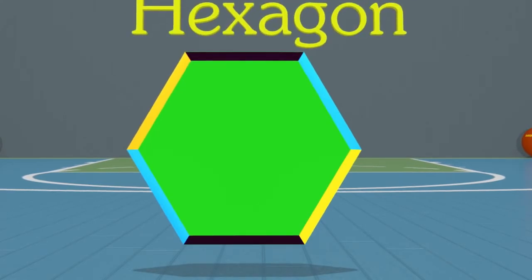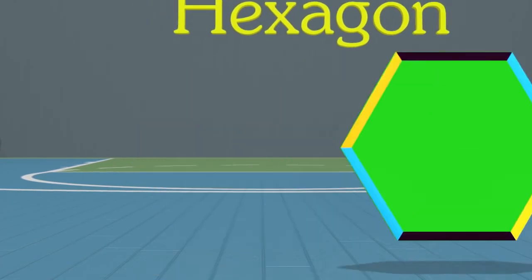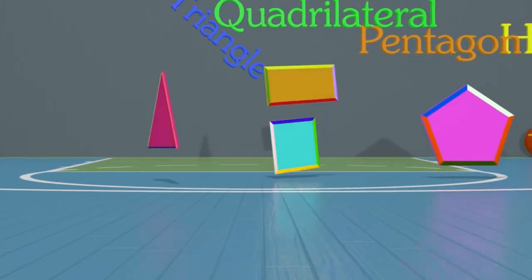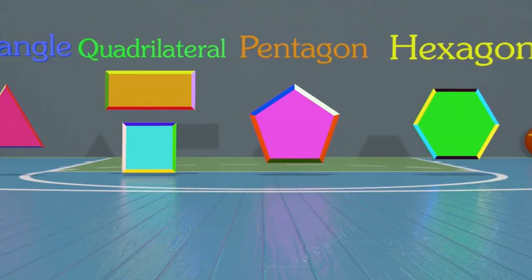You can draw all of these shapes by counting sides and angles. Great job again — you guys are awesome! But how are we going to remember all these shape names? We've learned so many. Let's make a list to help us remember everything we've learned. Here we have a triangle, a quadrilateral, a pentagon, and a hexagon.